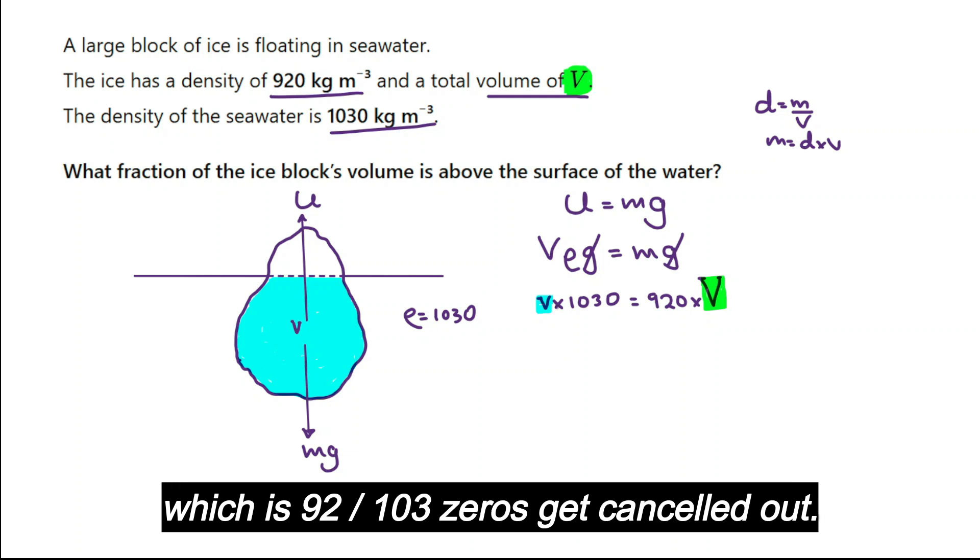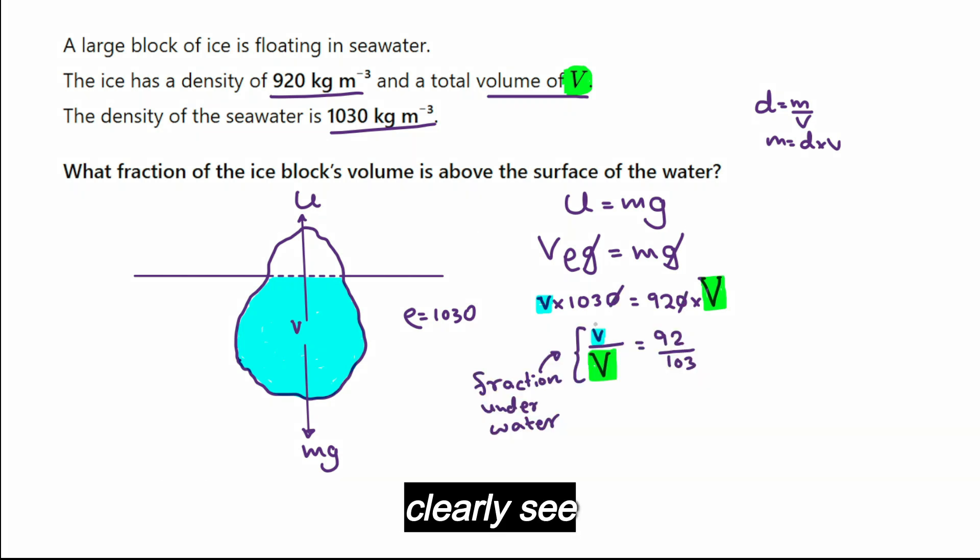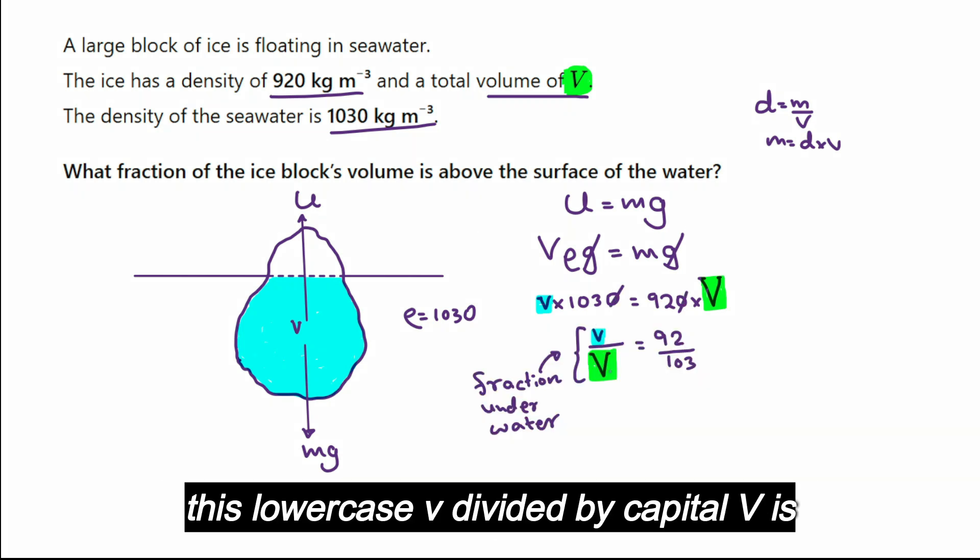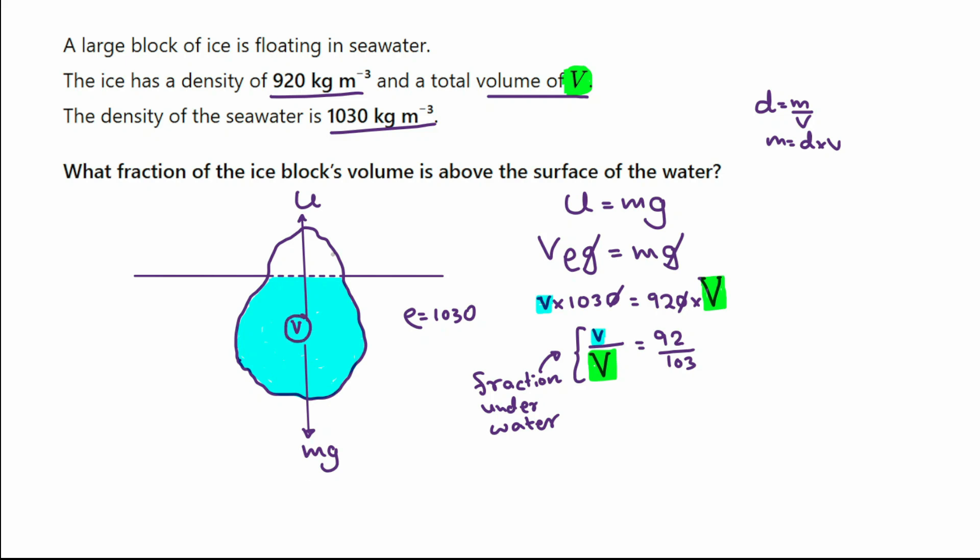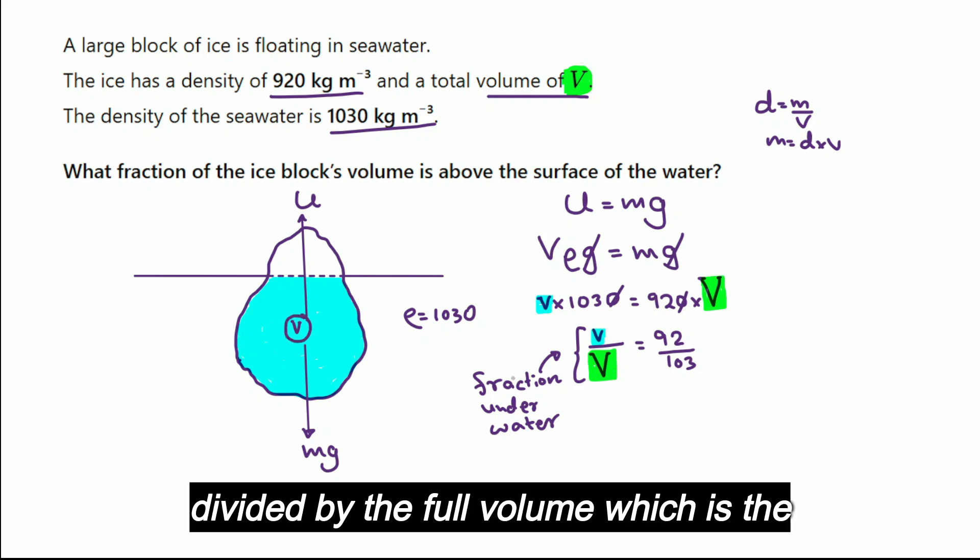Now if you look at this one, you can clearly see this lowercase v divided by capital V is the volume underwater divided by the full volume, which is the fraction of iceberg underwater.